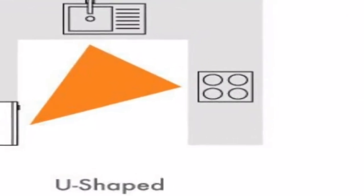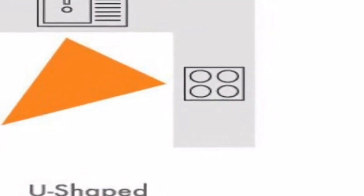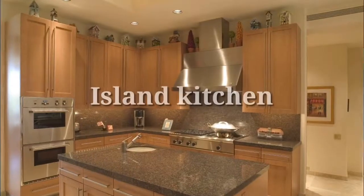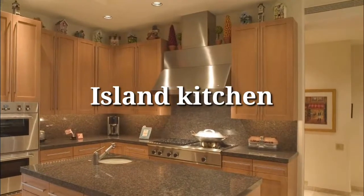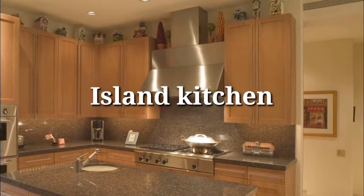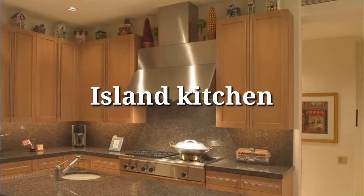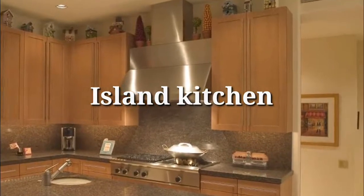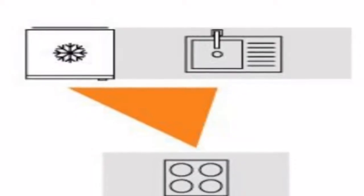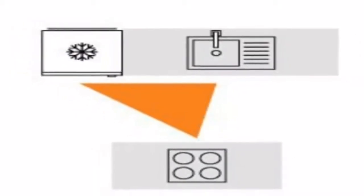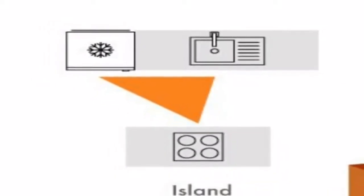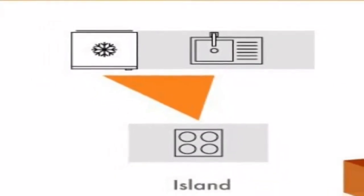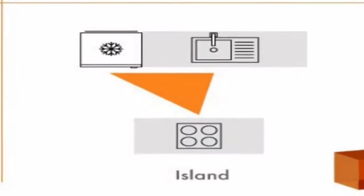The third type is an island kitchen. In an island kitchen, you have an open layout. If you have a straight kitchen, you will have a work triangle, and the island adds a small extra workspace.